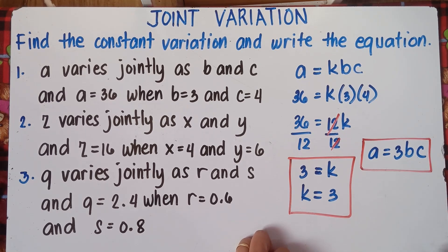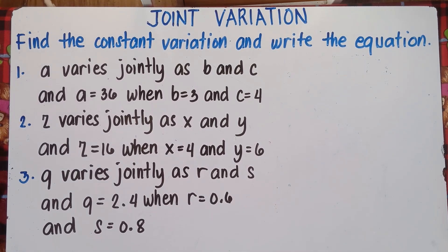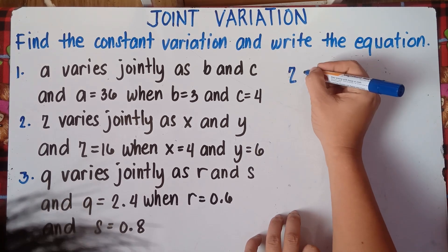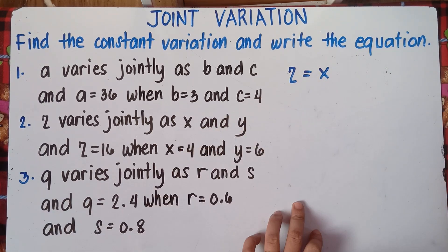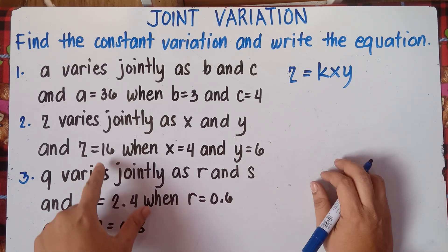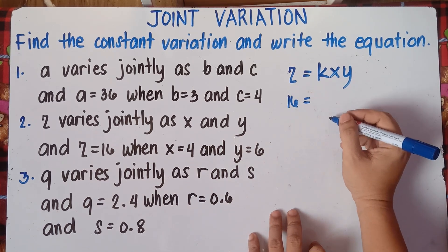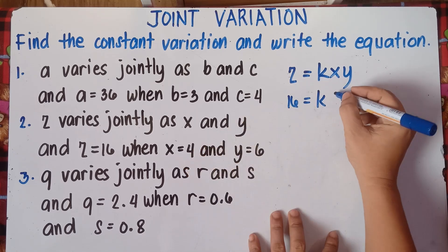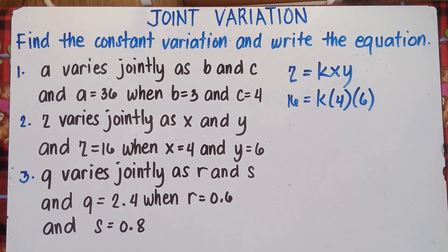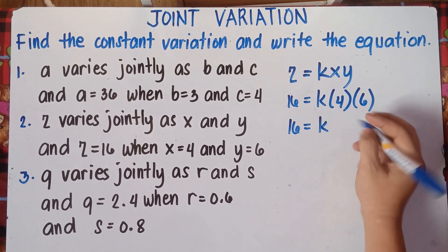Let's try number 2 — pause the video. For number 2, it says Z varies jointly as X and Y. So Z equals KXY — do not forget K. Z is 16, so substitute: 16 equals K times X times Y. Our X is 4 and Y is 6. So multiply: 16 equals K times 4 times 6, which is 24K.